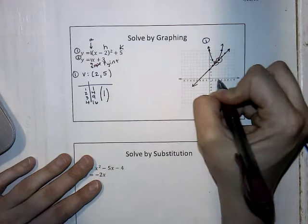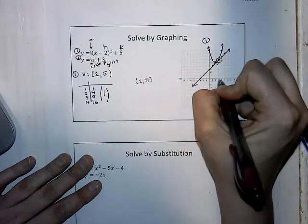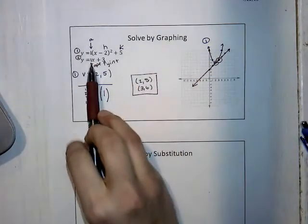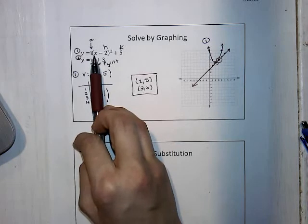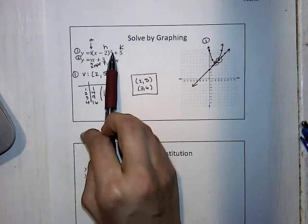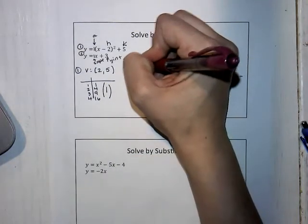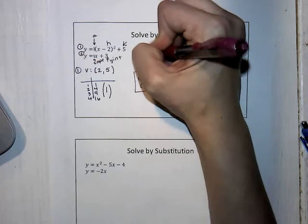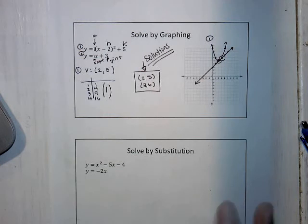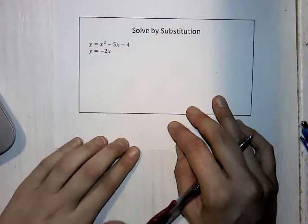So we have two solutions here. We have one at the vertex, which is (2, 5), and then we have one at (3, 6) as well. If we substitute those in for both equations, it's true for both: substituting 2 gives 0 plus 5 equals 5; substituting 3 gives 1 plus 5 equals 6, and 3 plus 3 equals 6. So we could have two solutions when we're talking about a quadratic and a linear together. Be careful that you're looking for every single time it crosses.